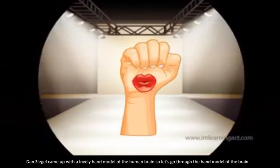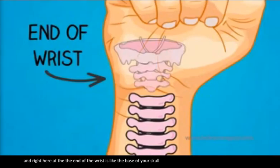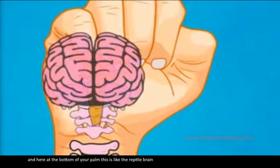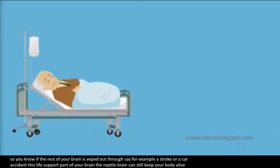Using a hand model of the human brain: the wrist and forearm is like your spinal cord, and right at the end of the wrist is like the base of your skull. Here at the bottom of the palm, this is like the reptile brain — the life support system of the brain.